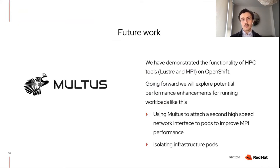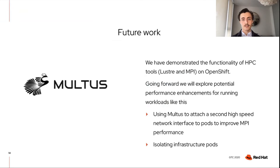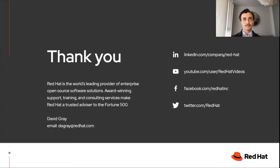In this session, we've demonstrated how the HPC tools Lustre, MPI, and NVIDIA GPUs can be effectively used on OpenShift to run a high-performance scientific application. Going forward, we aim to do more performance testing and tuning of HPC applications like GROMACS running on OpenShift with the MPI operator. We hope to explore using Multus to enable high-speed networking, as well as other ways to improve performance such as isolating infrastructure pods to specific worker nodes. Look out for future articles on the OpenShift blog covering these topics. Thanks for listening.